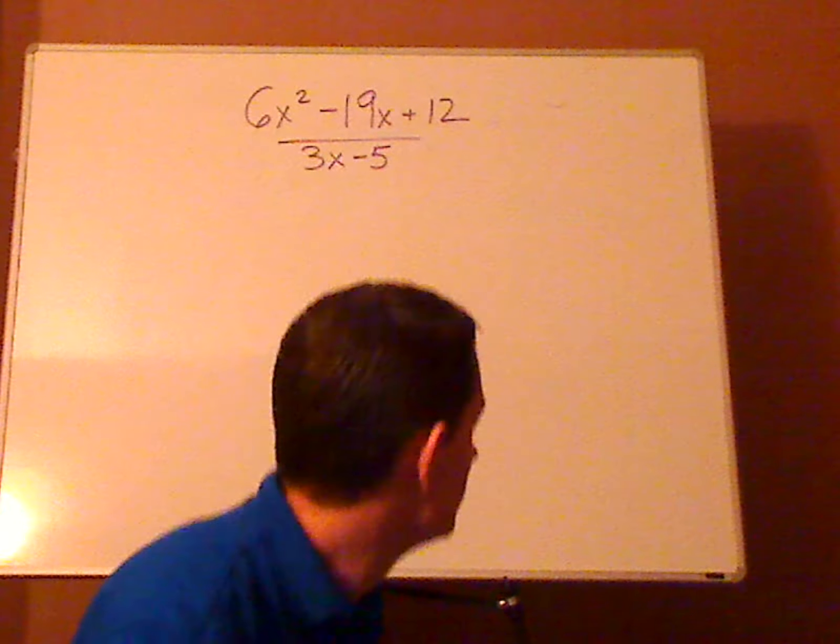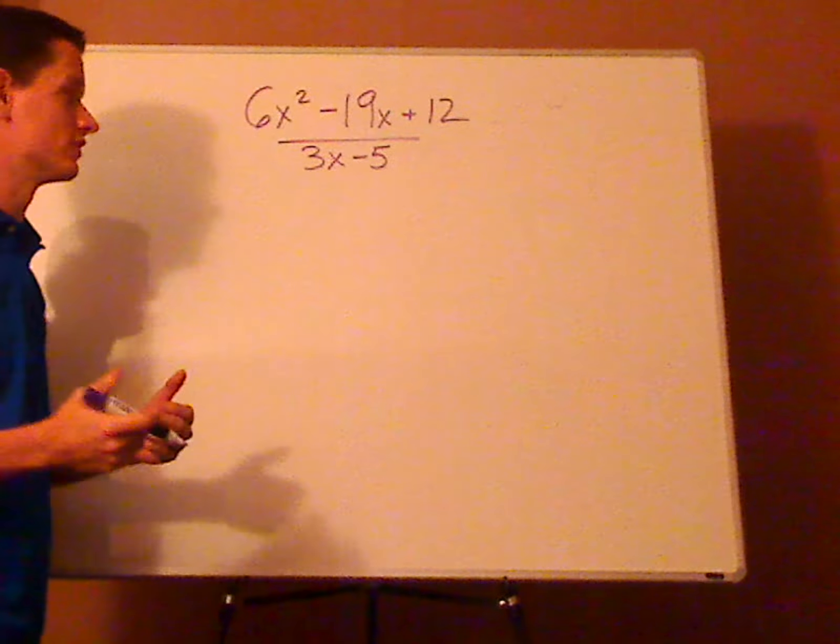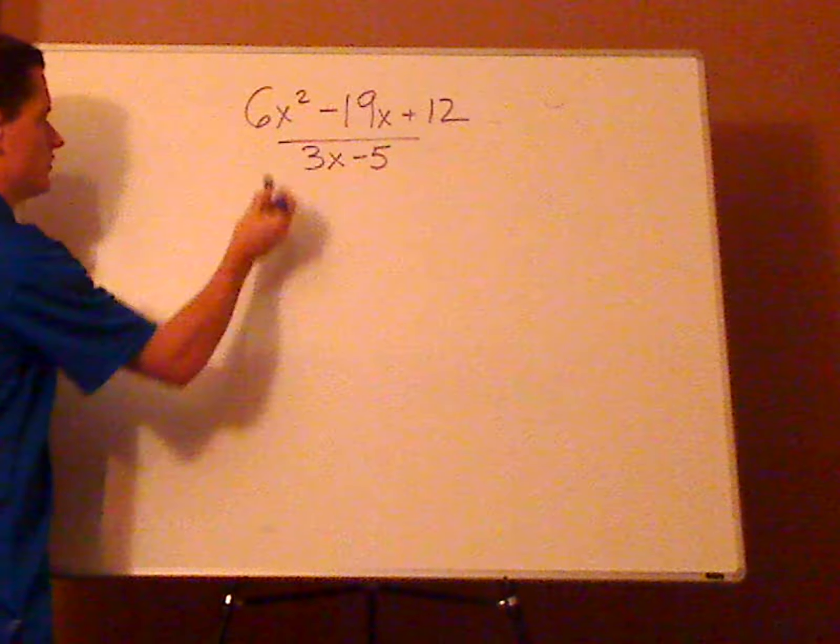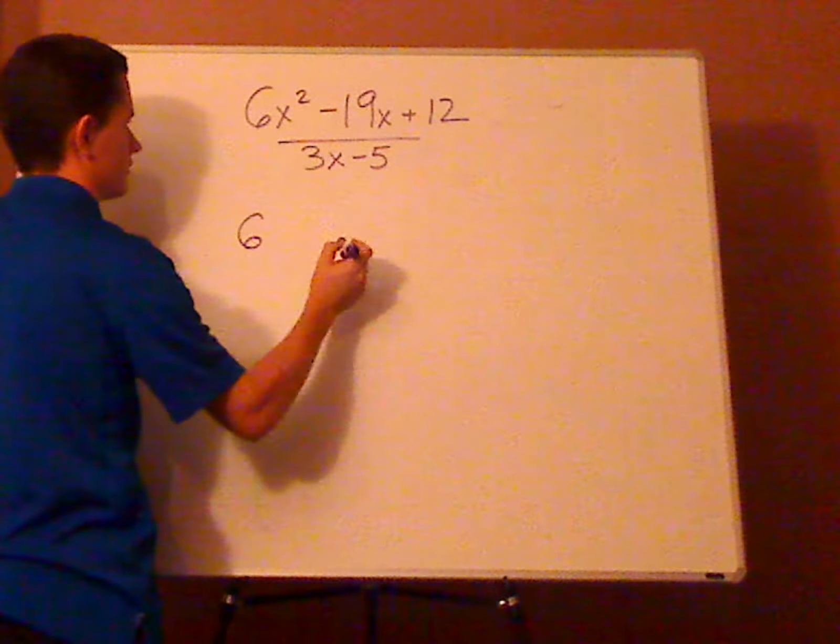Alright, so with this it's not what you are used to as far as Synthetic Division is concerned. It's going to be very similar. So start off with the coefficients. You have 6, negative 19, and then 12.